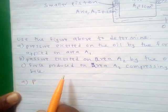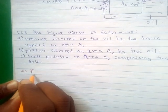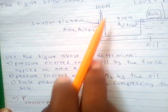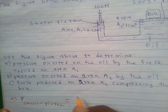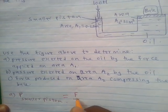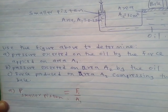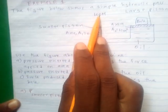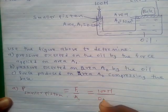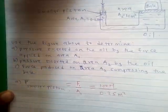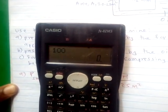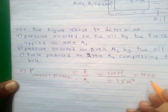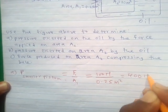For part A, we find the pressure at the smaller piston. The pressure equals force over area: F1 over A1 equals 100 Newton divided by 0.25 square meter. Using a calculator, 100 divided by 0.25 gives 400. So the answer is 400 Newton per meter square.